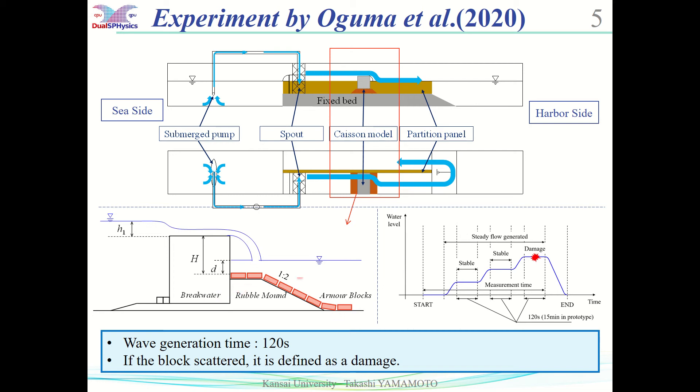The tsunami was generated by the submerged pump as a steady flow. The duration of flow generation is set to 120 seconds, and if no damage is detected during that time, the water level is increased and flow is generated for another 120 seconds. We define damage as a block turnover or sliding mound on its side, and stop flow generation when damage is confirmed.